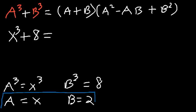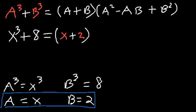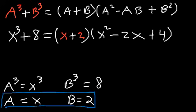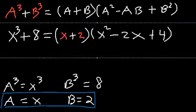With a = x and b = 2: a + b gives x + 2, a² is x², a times b is 2x, and b² is 2² = 4. So x³ + 8 factors as (x + 2)(x² - 2x + 4).